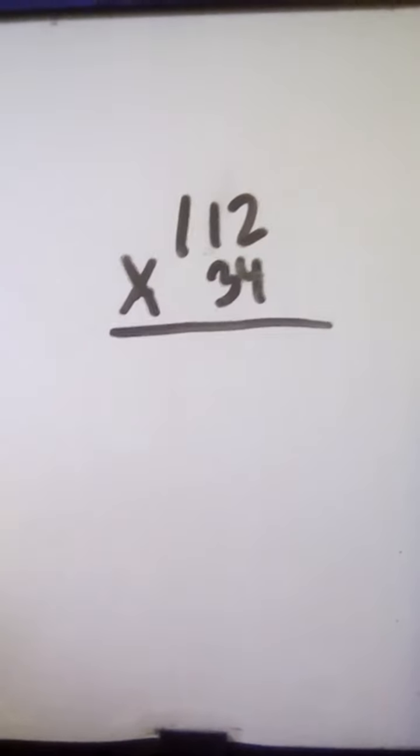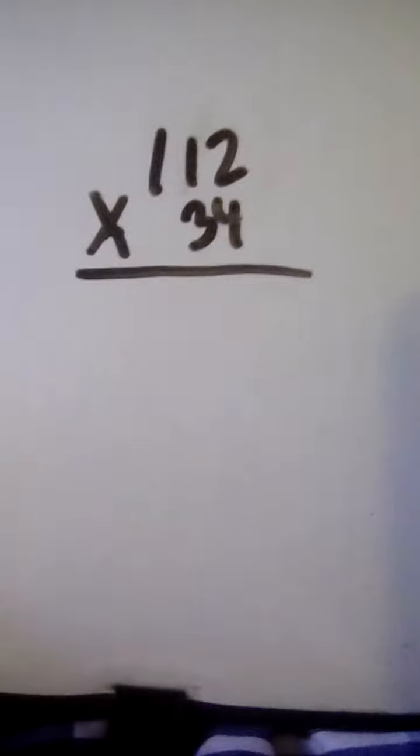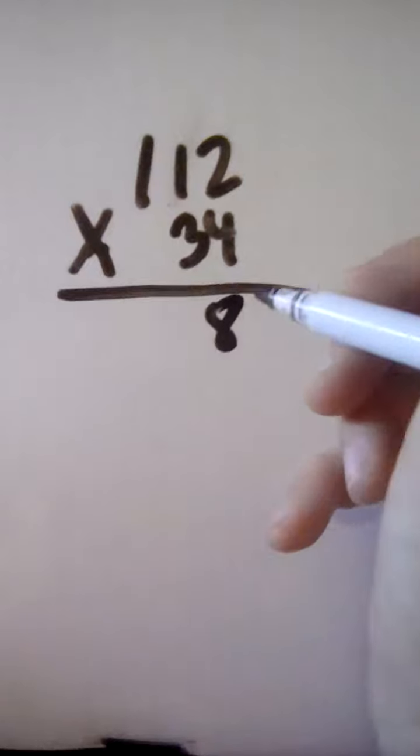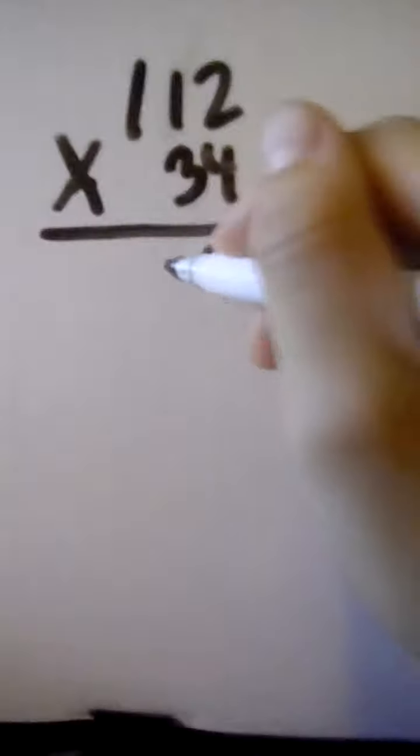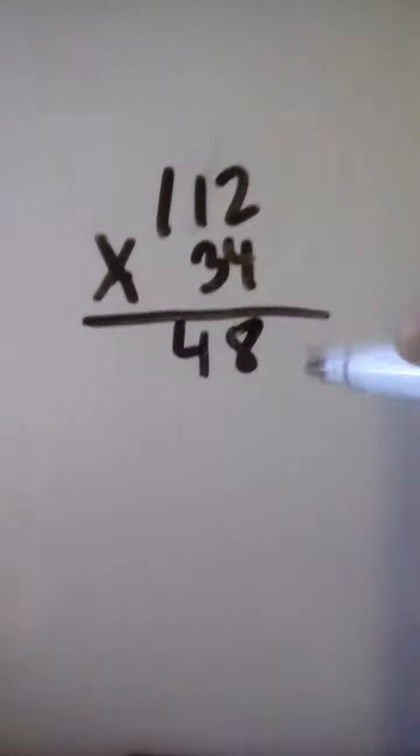Okay, first off we're going to multiply 4 times 2. 4 times 2 is 8, then multiply 4 times 1 is 4, then we're going to multiply 4 times 1 again, which is 4.